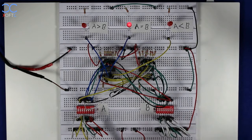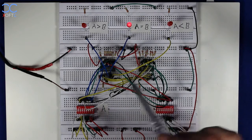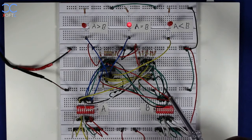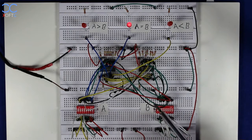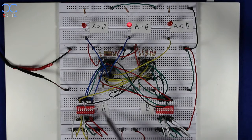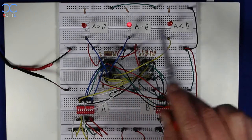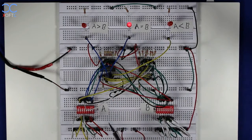So first of all, let's see what we have on the breadboard. We have two 4-bit magnitude comparators, 7485. Here we have two 8-bit dip switches which represent our inputs A and B, and here we have three LEDs which represent the outputs.